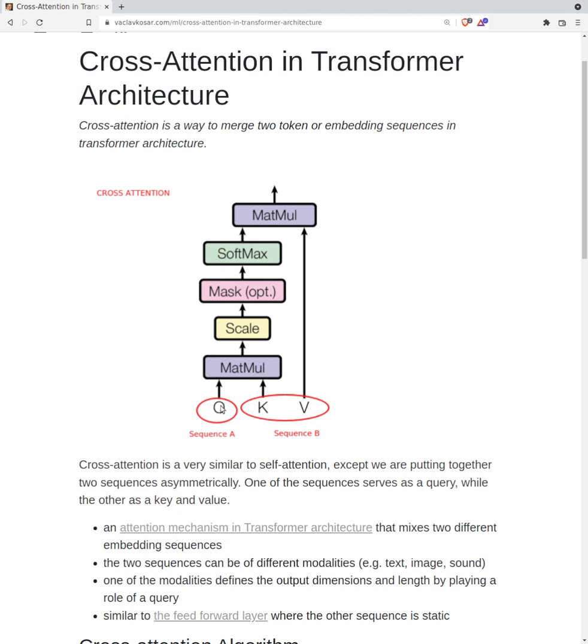We take the query and key embedding sequences, multiply them, scale them - you can skip the scaling but it's there - then do optional masking and softmax. On the output we use the values, but because from the left we have the query, the length of the output sequence will correspond to the length of the query sequence.